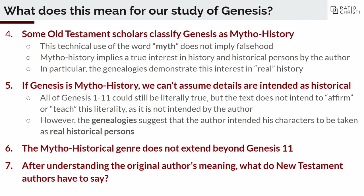So in the context of what is the literary genre — we decided that if that was a legitimate characterization, then this may mean that you can't assume all of the details in Genesis 1 to 11 are intended to be historical. You have to do a lot more deep digging to understand what's being conveyed. This is going to be important for today, because we're going to talk about different interpretations in the context of how Genesis relates to science.